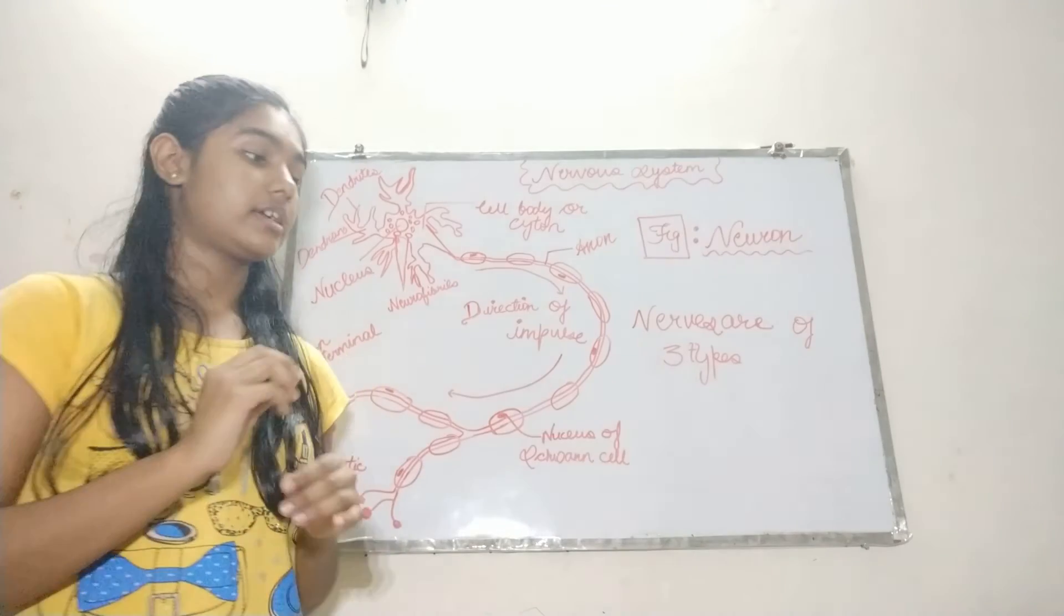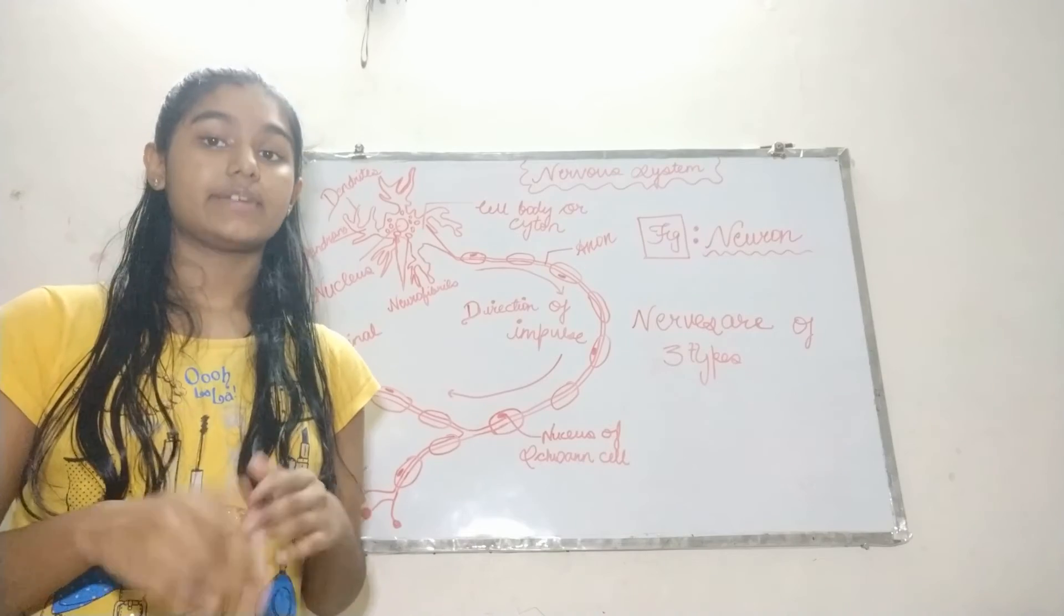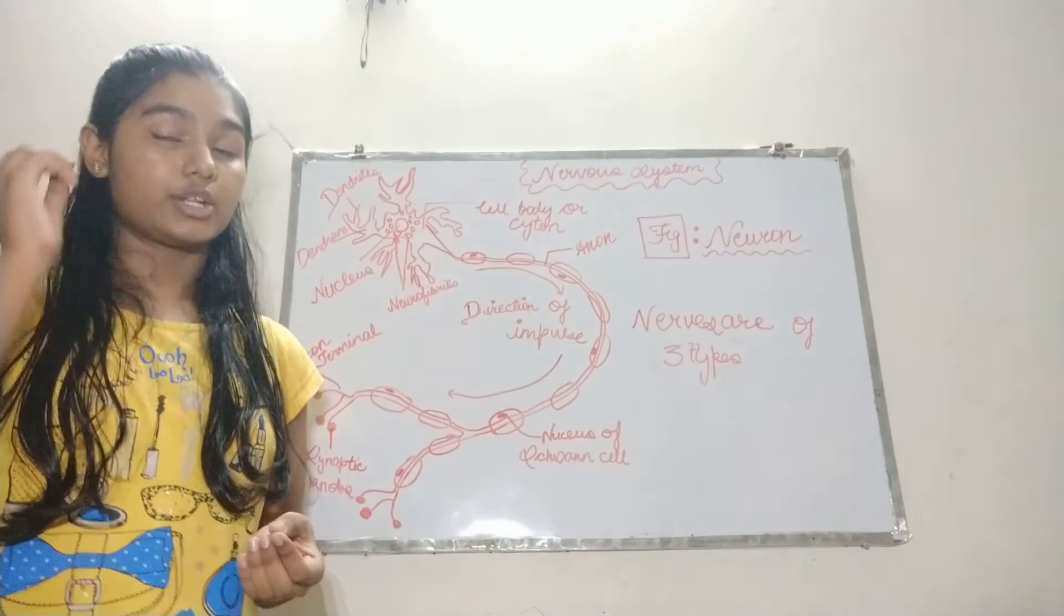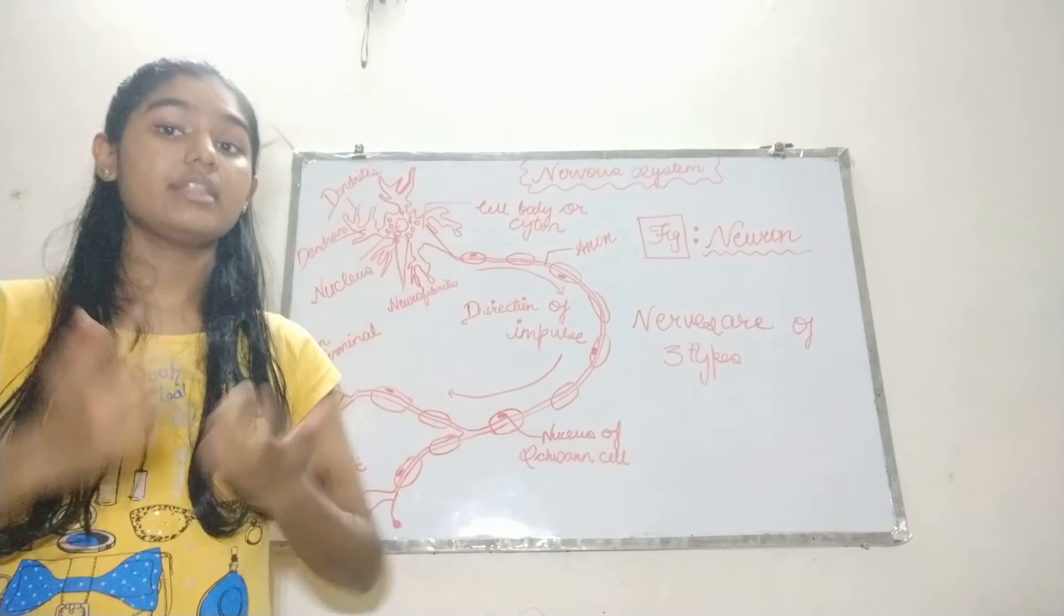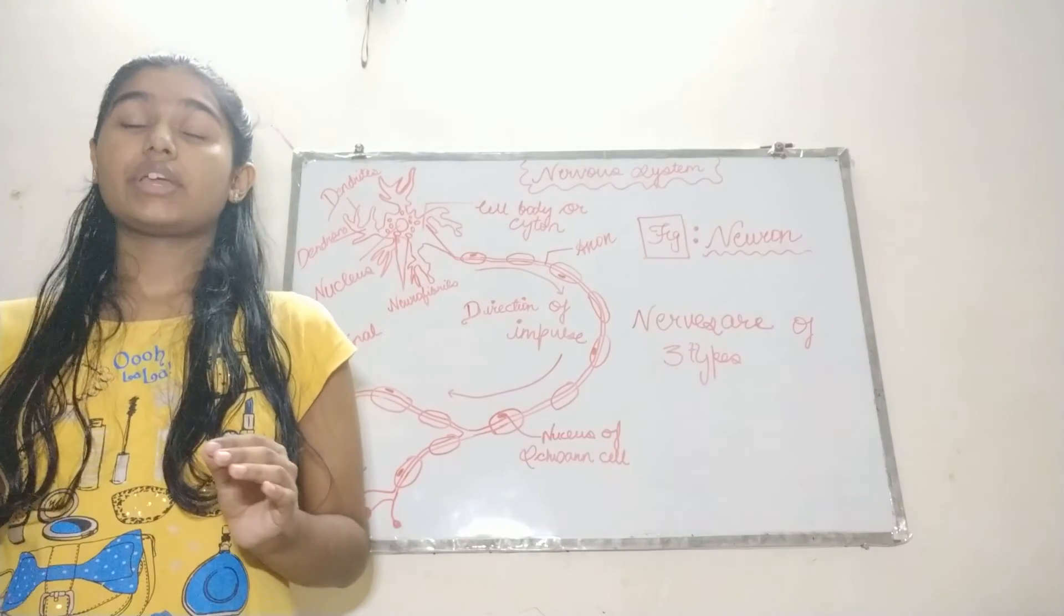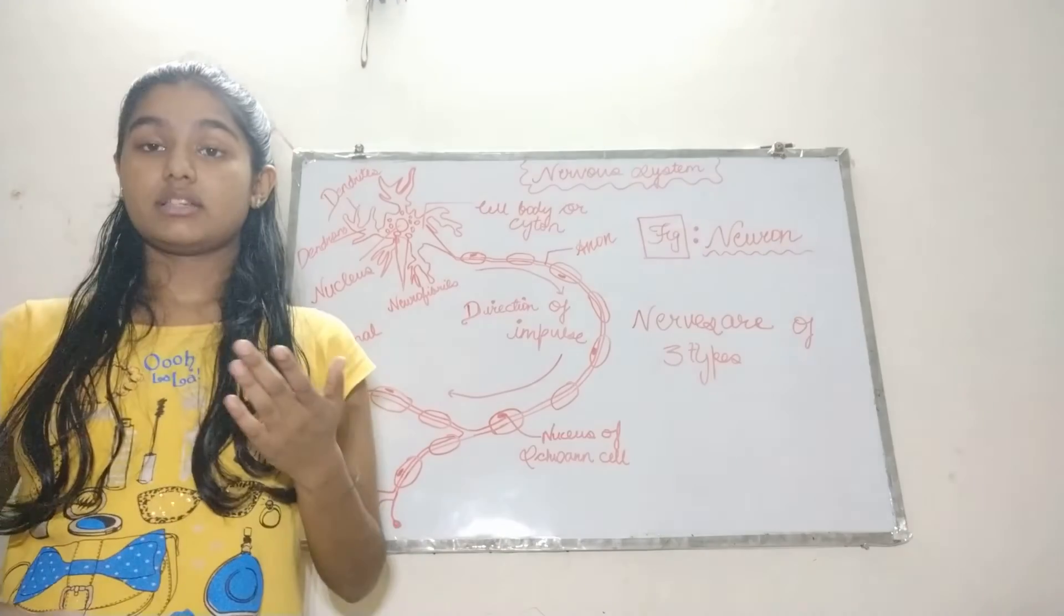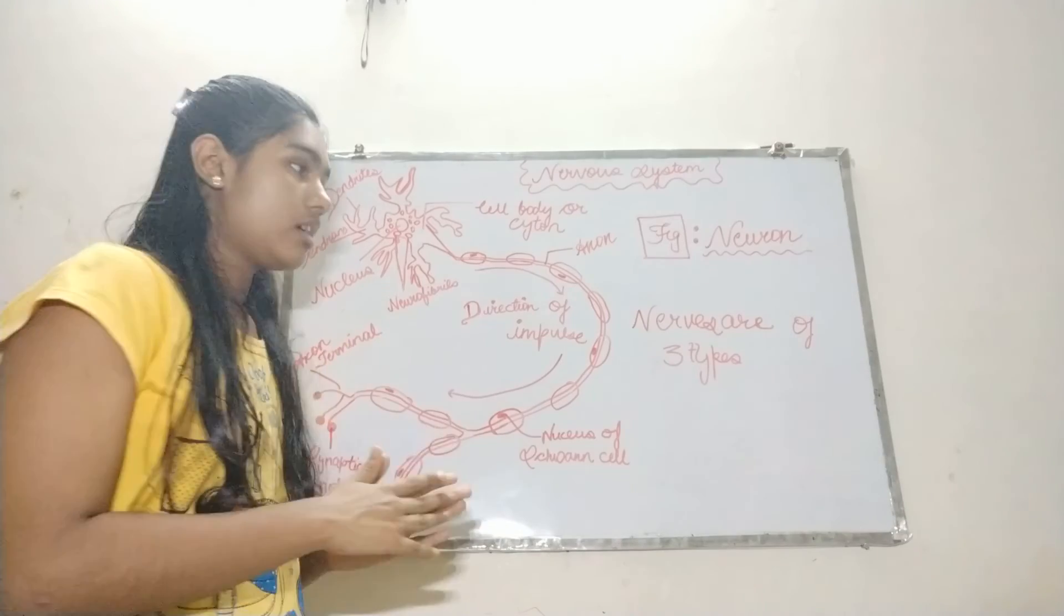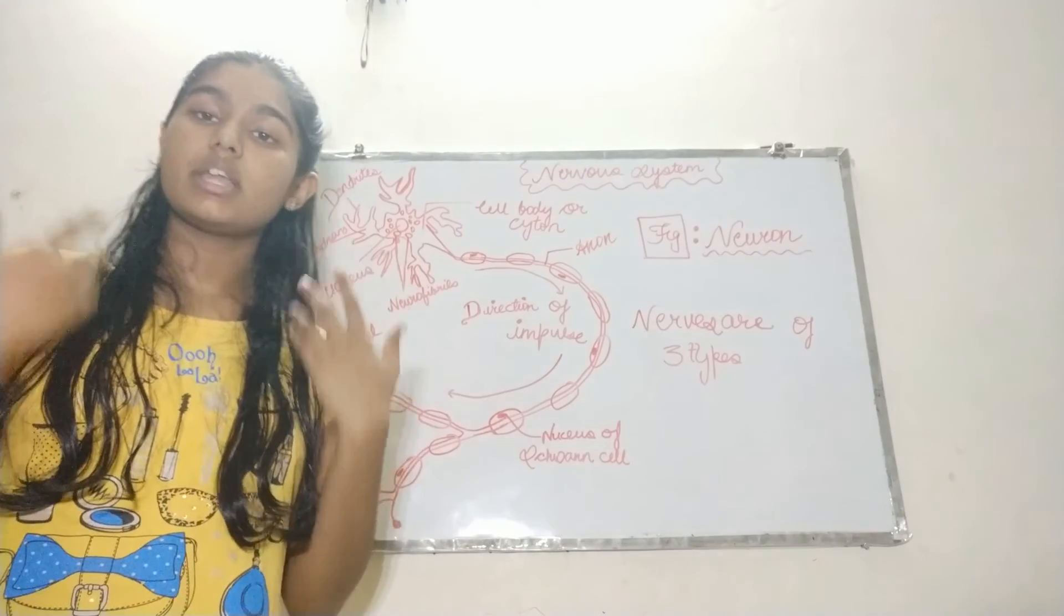And the last part is according to origin. Nerves are also divided into a category, which is cranial nerves and spinal nerves. Cranial nerves are those nerves which arise from our brain. There are 12 pairs of cranial nerves in our human body. And the second is our spinal nerves. Spinal nerves are the nerves which arise from the spinal cord. There are 31 pairs of spinal nerves in our human body.